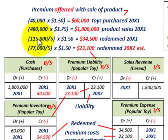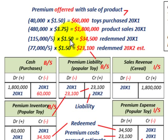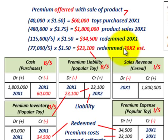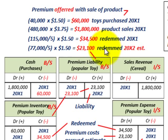For the cost of toys redeemed in the first year: one hundred fifteen thousand coupons divided by five coupons per toy, multiplied by the cost per toy of a dollar fifty cents, gives thirty four thousand five hundred dollars — the cost of redeemed toys in 20x1. The remaining seventy seven thousand coupons estimated for 20x2: seventy seven thousand divided by five, times a dollar fifty cents, gives twenty three thousand one hundred dollars estimated cost for next year.